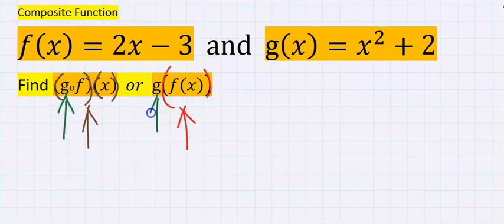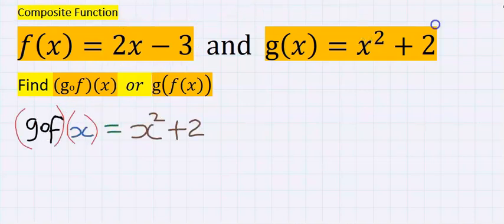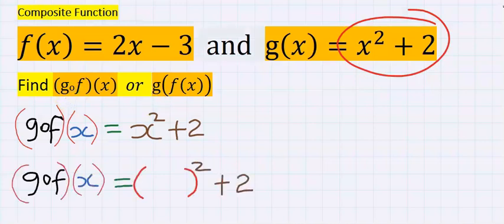To solve this problem, the g came first, hence I will take the value of f, which is 2x minus 3, and input it for the value of x. The first step is write the value of g of x. The reason is g came first. Next, instead of x, I'm going to replace it with the values of f of x, and this is the answer.